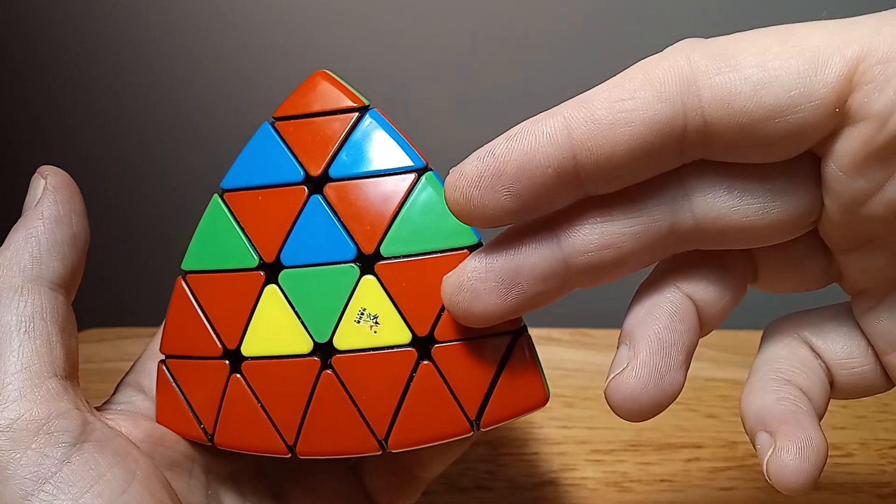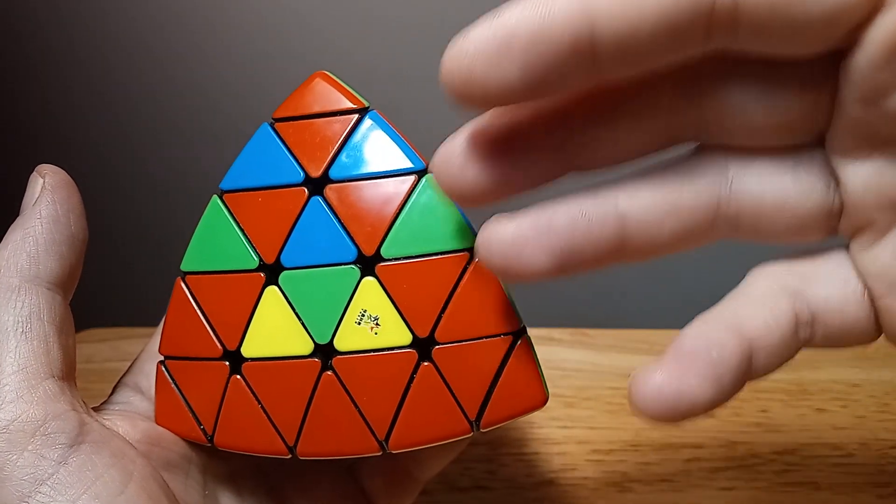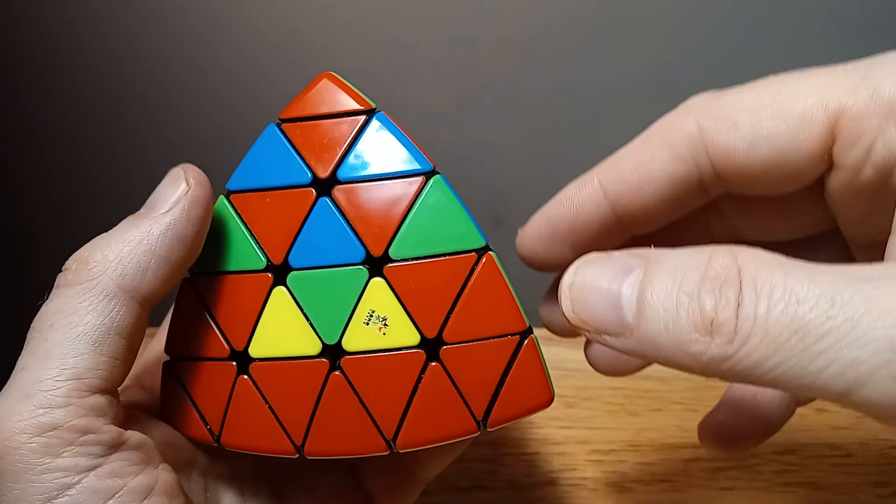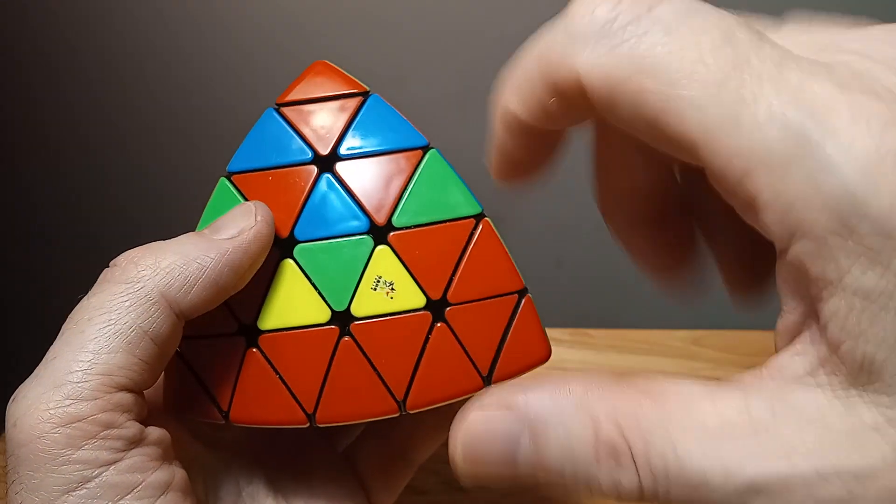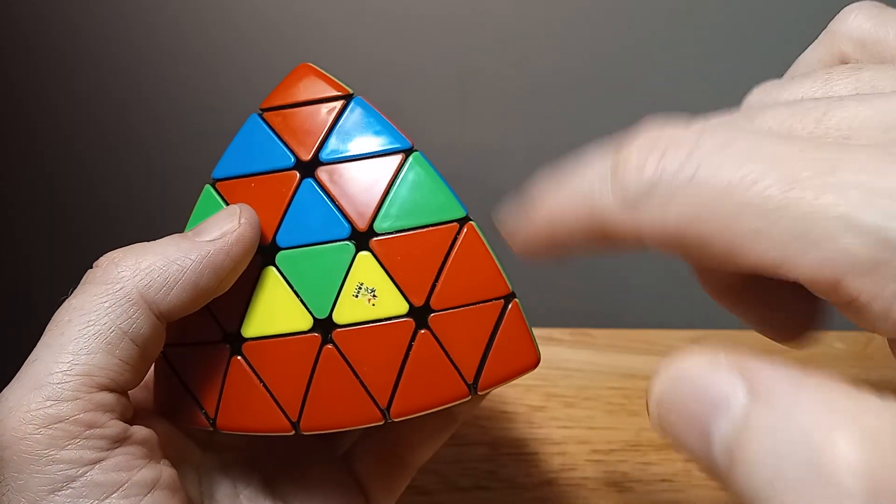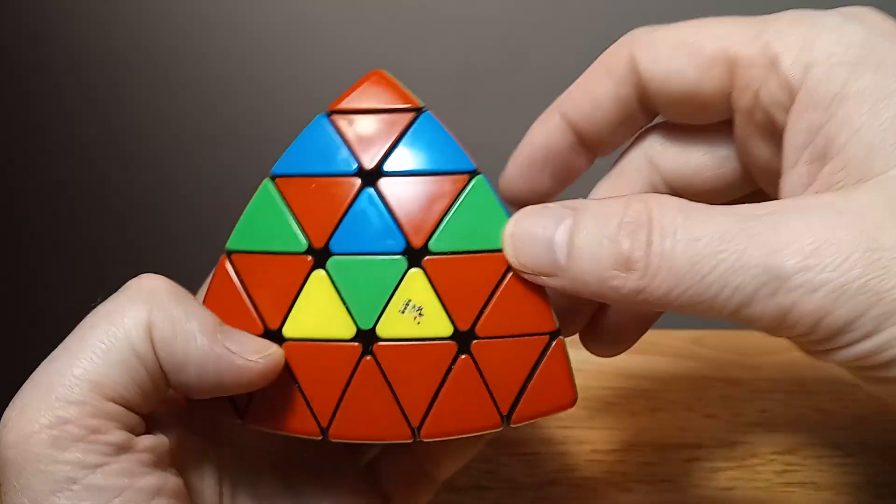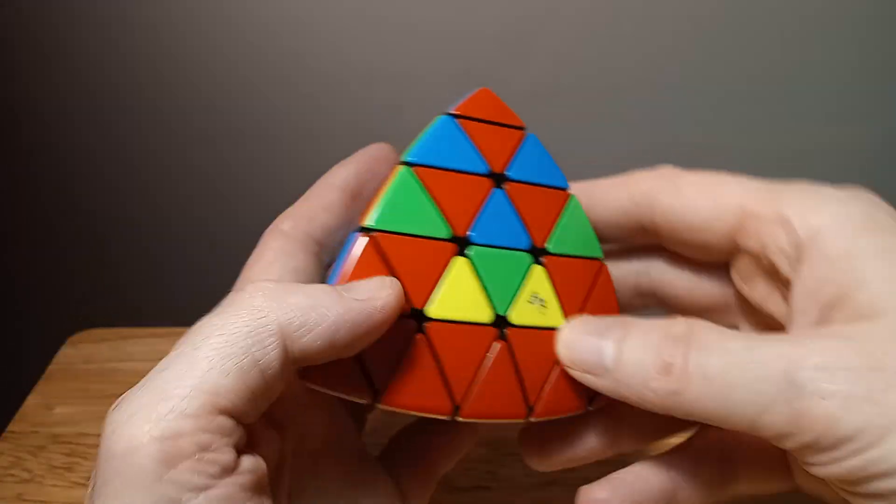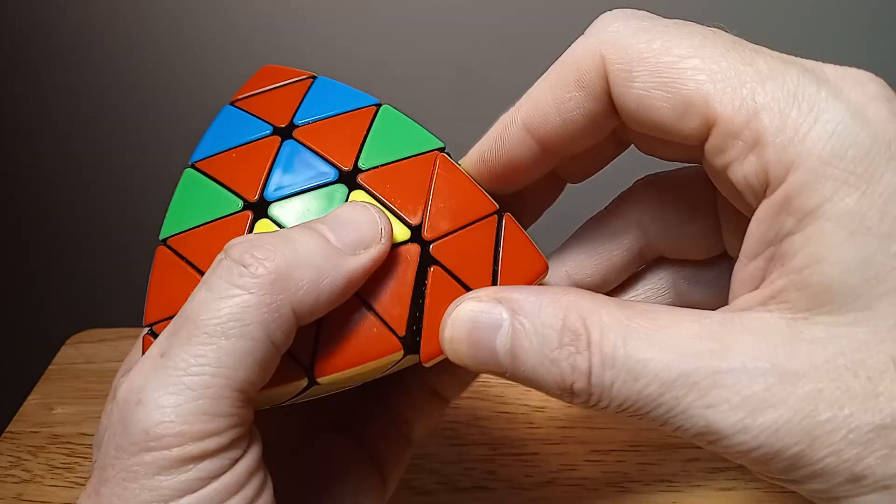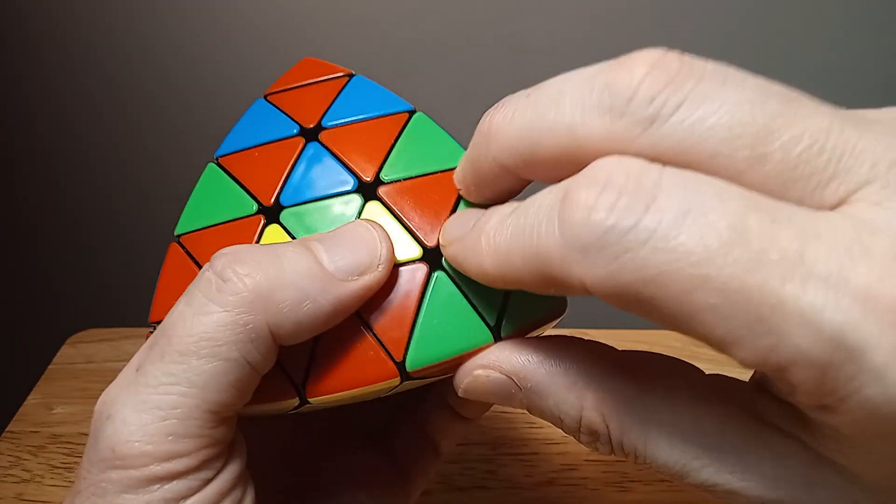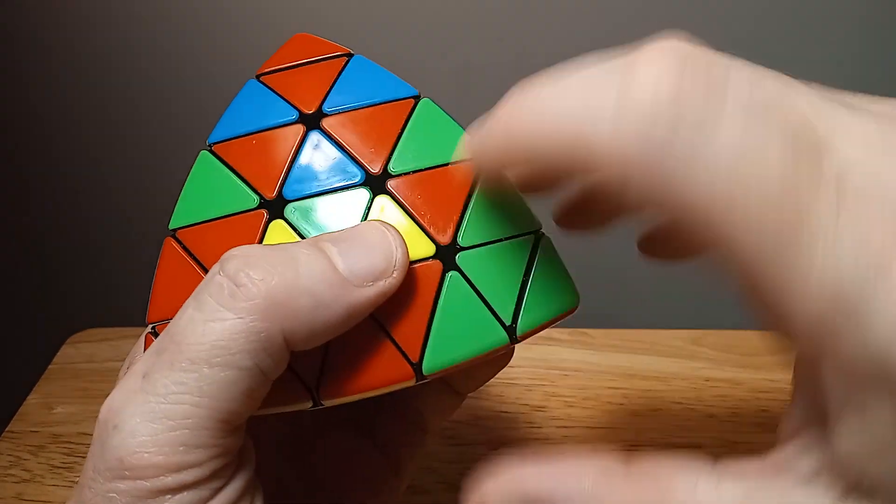...and I have the 4x4 Master Pyraminx, the older style, and it's not good. It's very sloppy, it overshoots, and it's a little hard to turn. But Yuxin made an excellent one because the clicking mechanism is great. It just sort of falls into place.